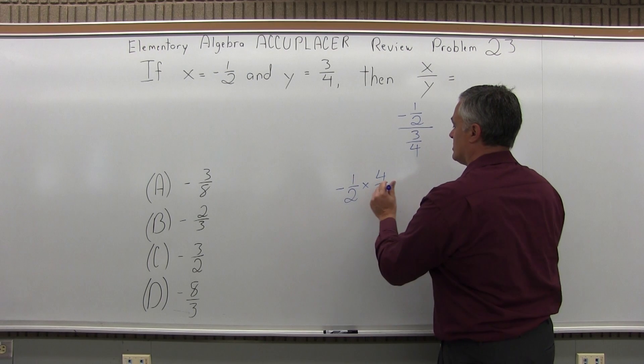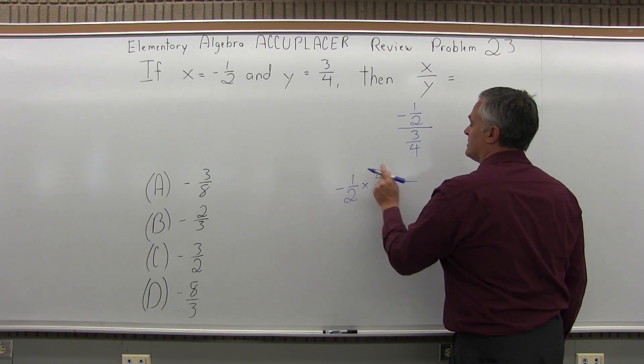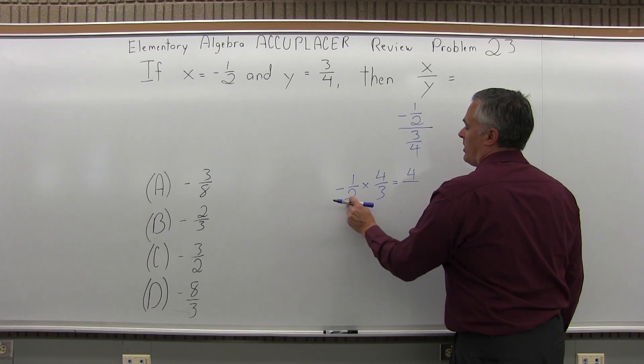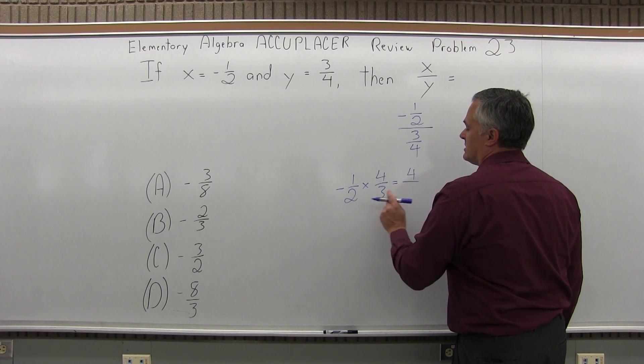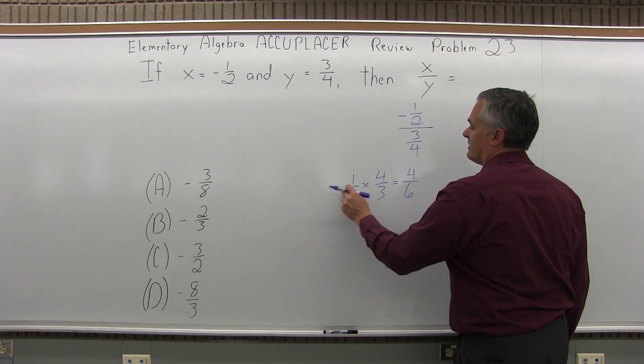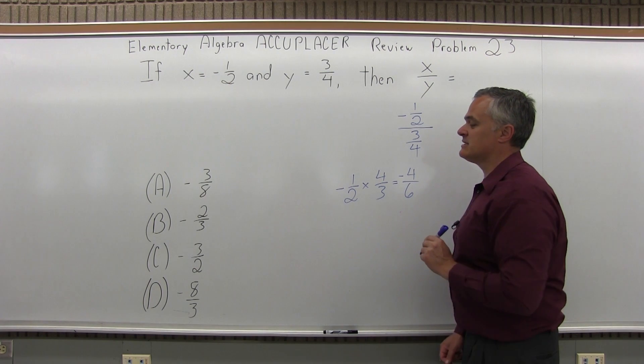So now I can do top times top. One times four is four. Bottom times bottom. Two times three is six. I have a negative times a positive, so it's negative four-sixths,